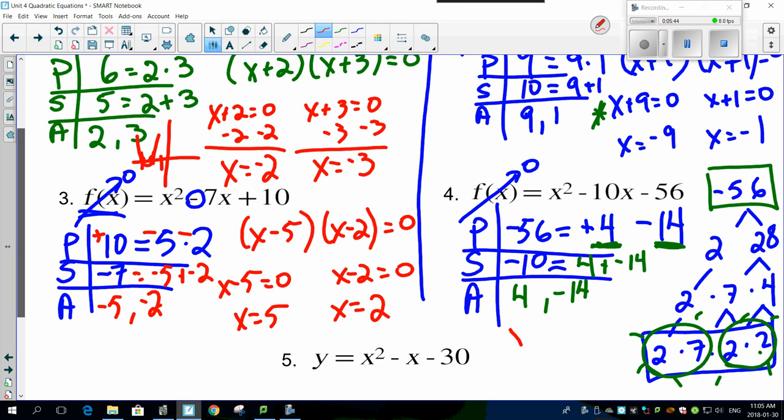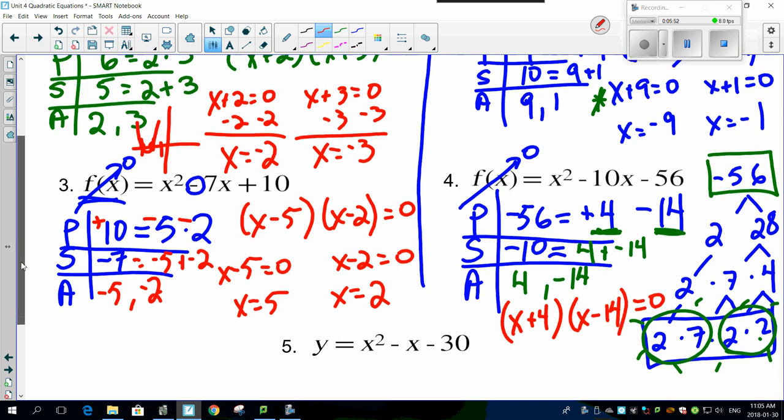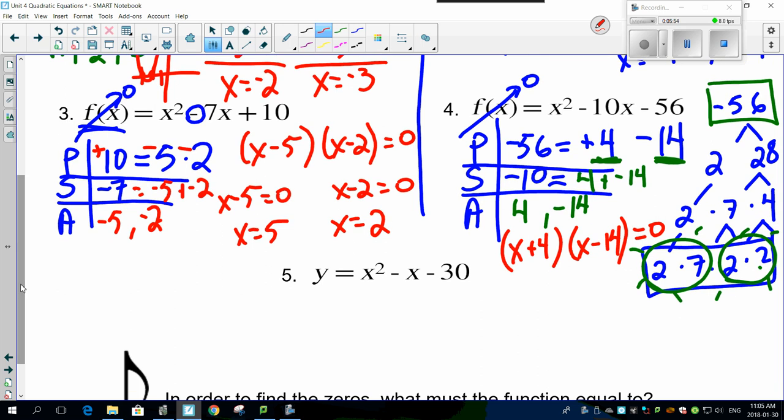So continuing on then, this gives you (x + 4)(x - 14) = 0. Running out of room there. x + 4 = 0, x - 14 = 0. So you've got x = -4 and x = 14.